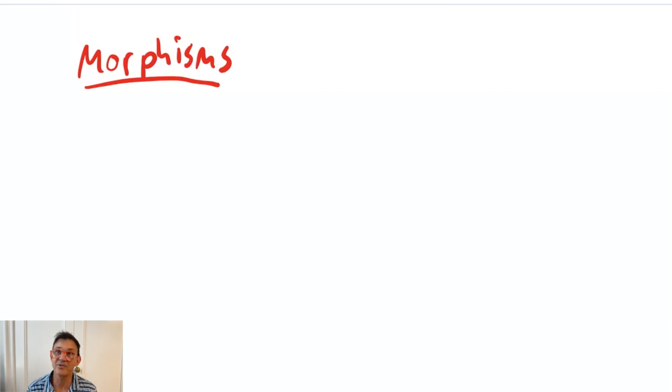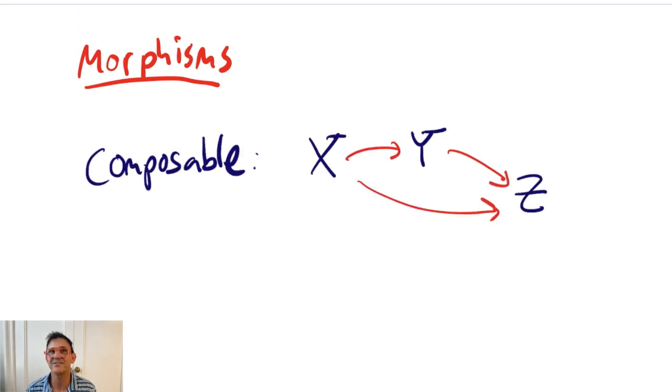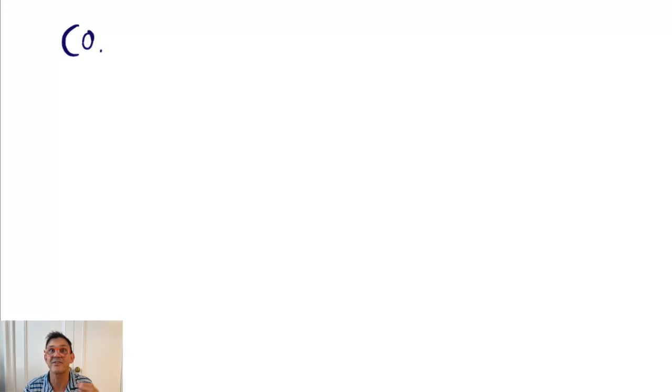Now, if we're going to focus on morphisms, we should know a little bit about them. The first thing to know is that they're composable. And the second thing to know is that there are identity morphisms. Whenever you have a compositional structure for which there are identities, you can define what it means to be invertible.